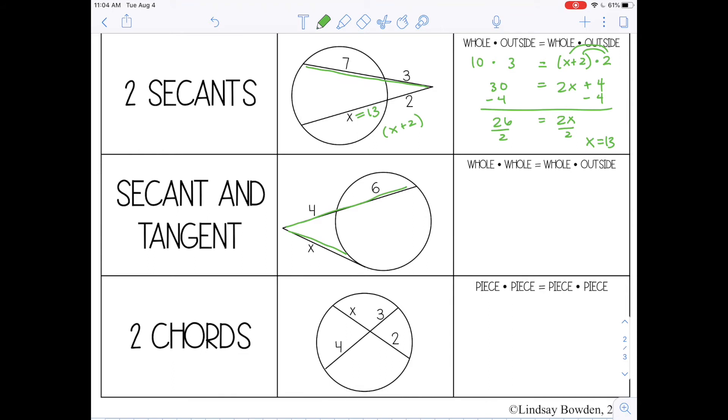And whole times whole refers to the tangent, because the tangent won't be broken down into pieces, it'll just be one piece. So you just multiply the length by itself, x times x. And then for the secant, the whole is 10, the length of the whole segment is 10, 4 plus 6. And then the outside piece is 4.